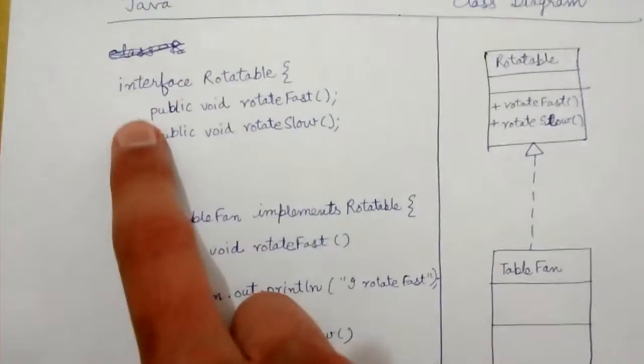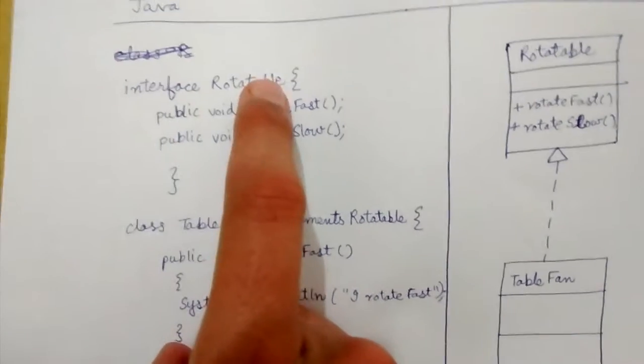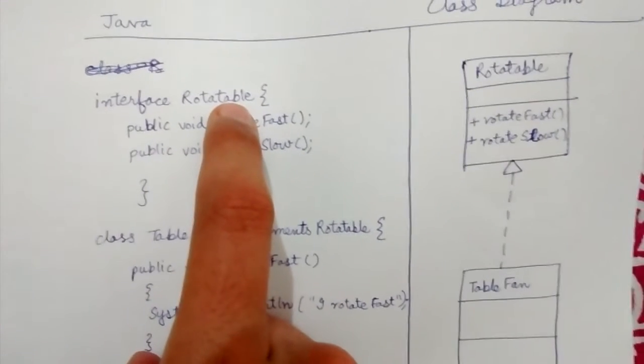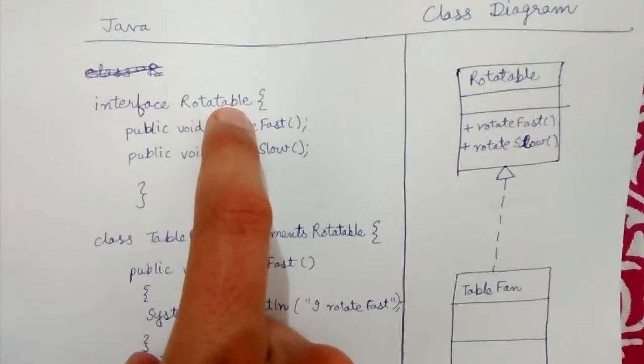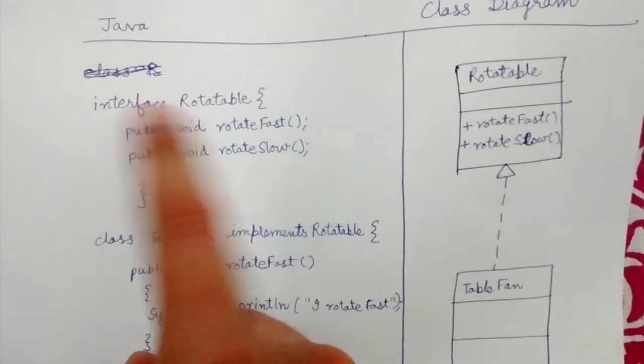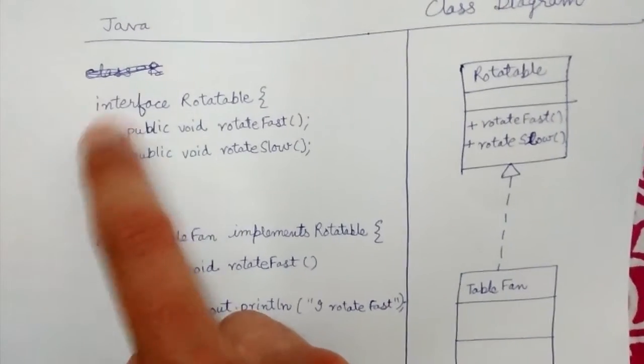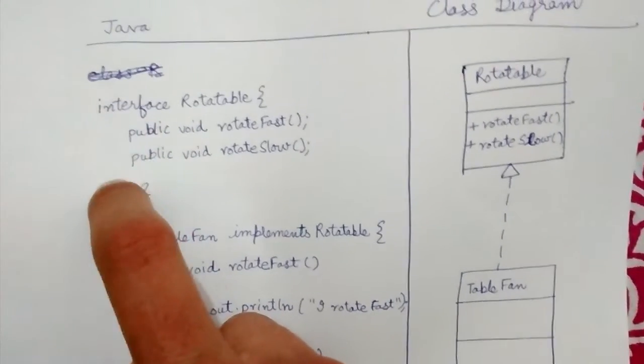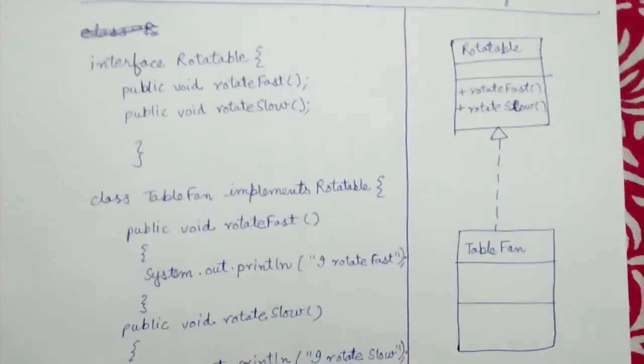Here there is an interface rotatable which represents all the objects which can be rotated like table fan, ceiling fan, car tire, tire of a truck, anything which can be rotated.